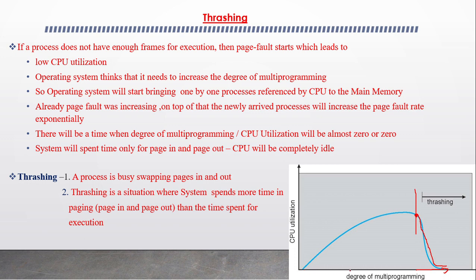This graph shows the y-axis as degree of multiprogramming and the x-axis as CPU utilization. Up to a certain point, as the degree of multiprogramming increases, CPU utilization also increases — this is the highest point. But beyond this point, even if the degree of multiprogramming is increased further, CPU utilization starts falling down. At that point the system starts thrashing. Thrashing is the point where even if the number of processes in main memory increases — that is, degree of multiprogramming increases — CPU utilization will not increase; it will start dropping and eventually become zero.